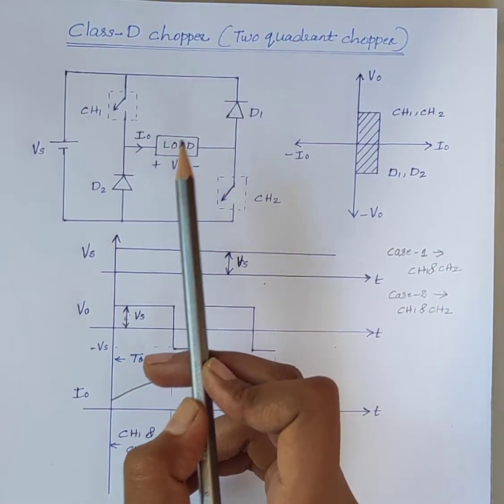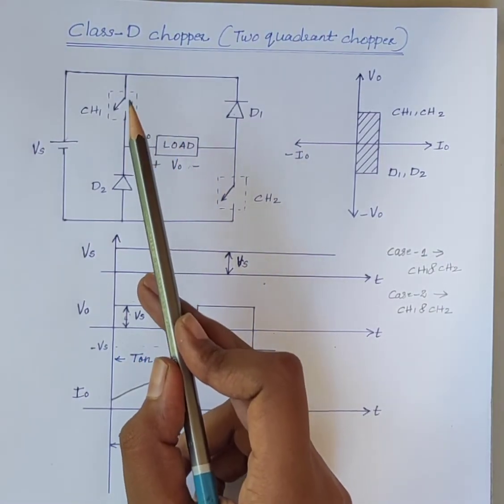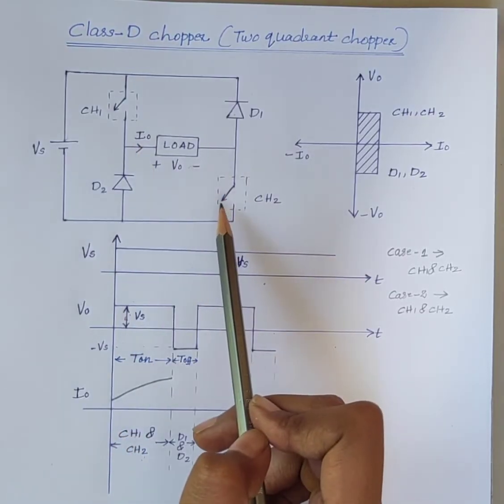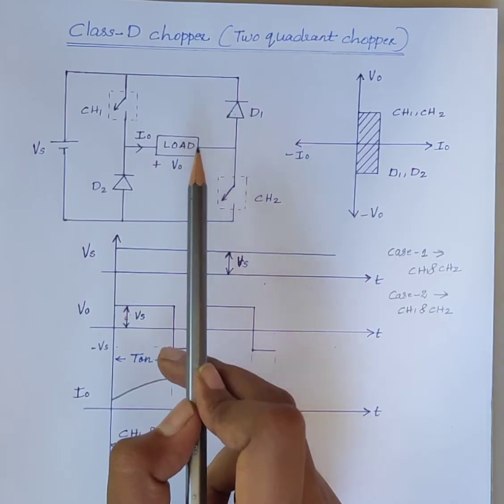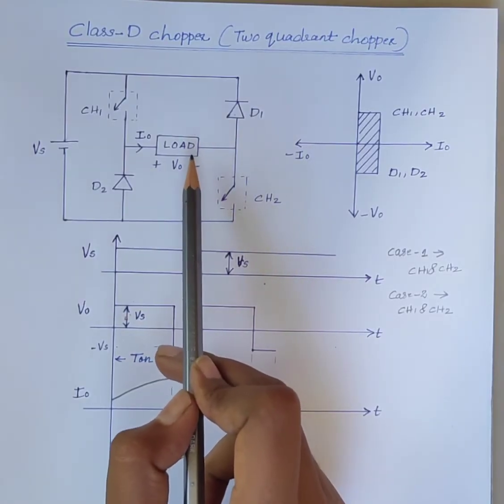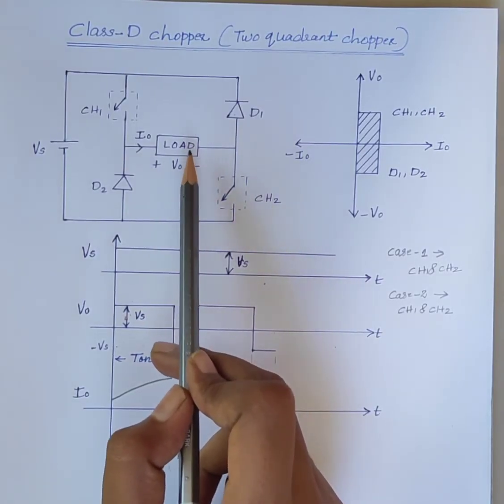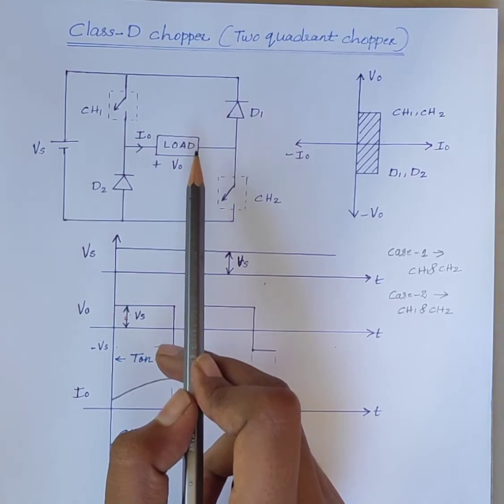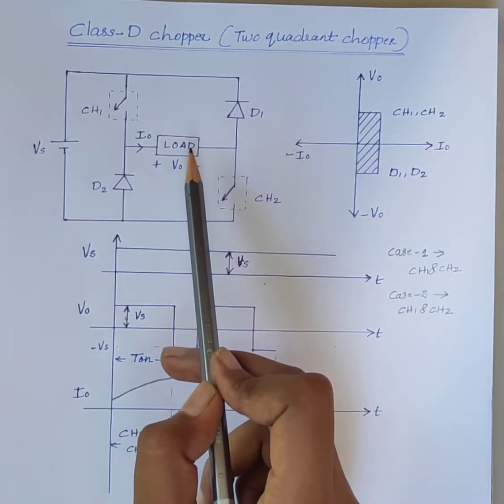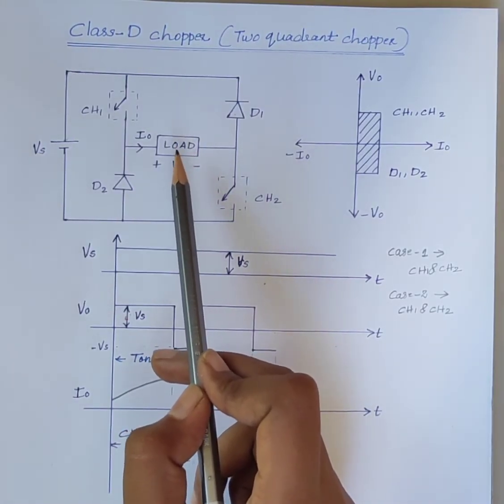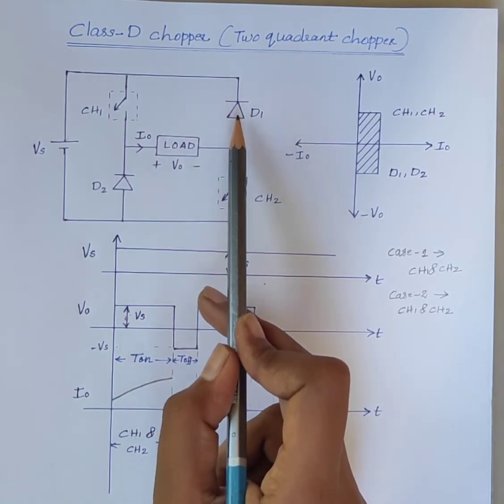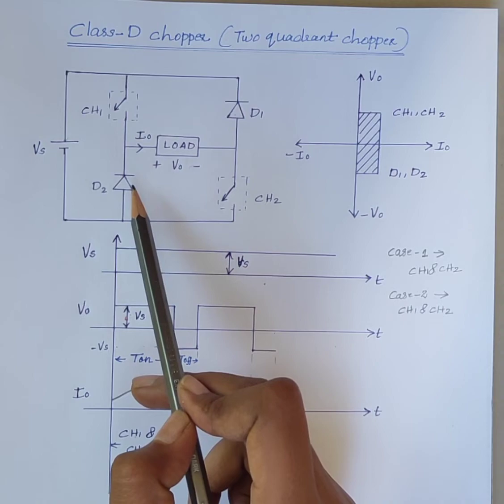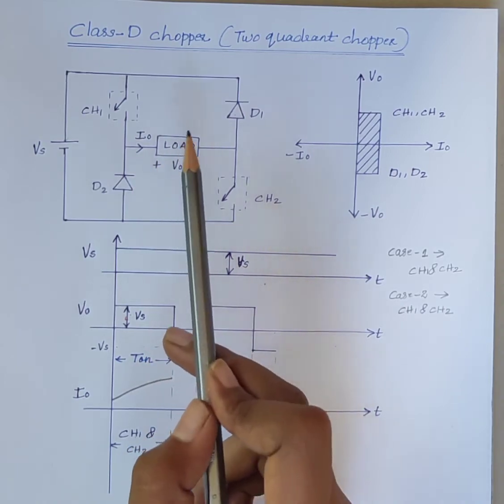When the choppers are made off simultaneously, the current through the load does not suddenly drop to zero due to the inductive nature of the load. Because of the induced voltage in the inductor, diodes D1 and D2 become forward biased.